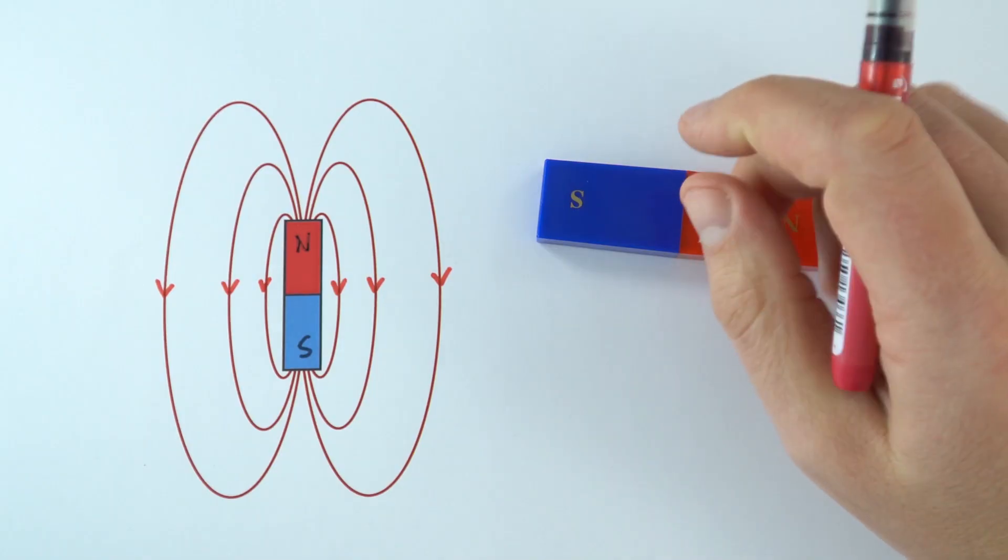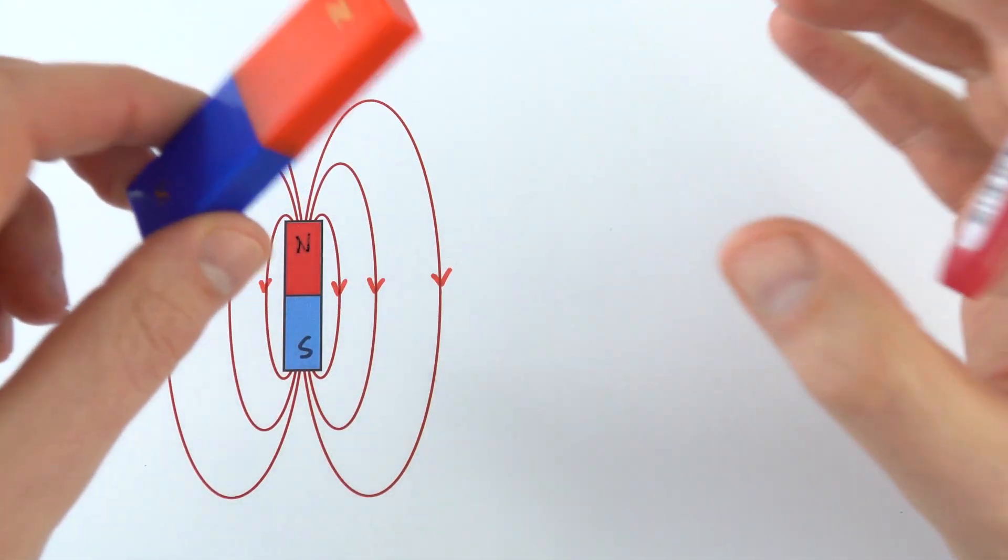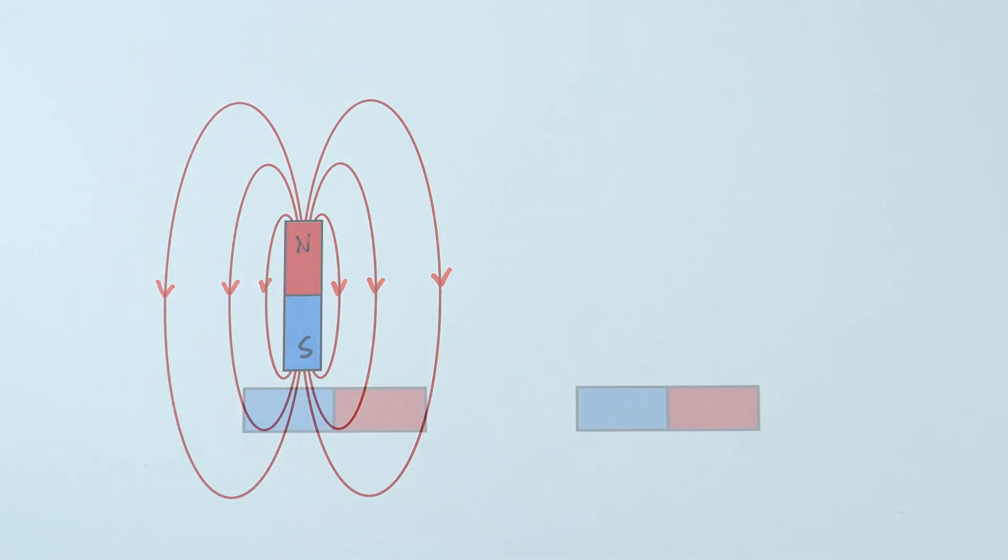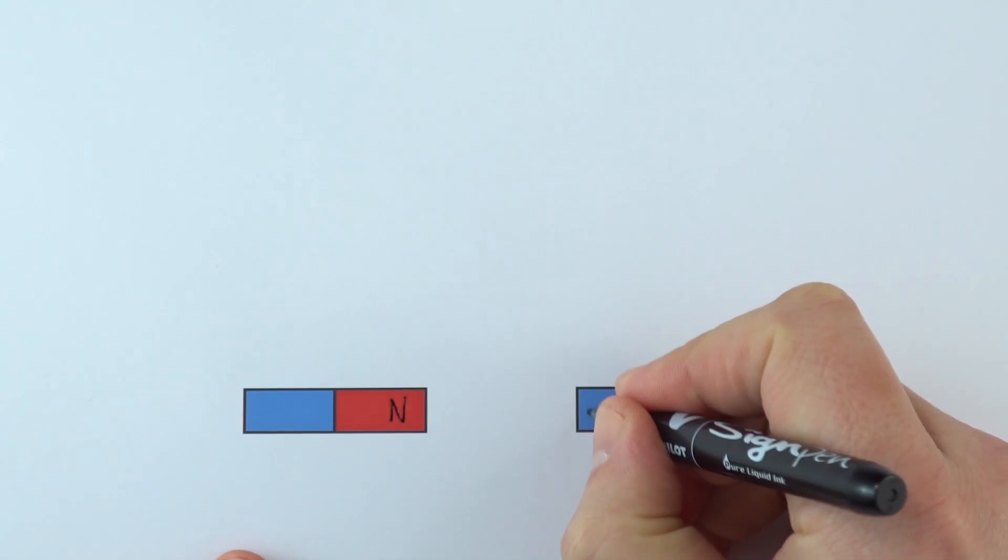But what happens if we're looking at maybe the field between two different magnets? Now we have two separate magnets and we've got the north and the south end pointing to each other. Therefore there's going to be this attractive force between them. What does the field actually look like?